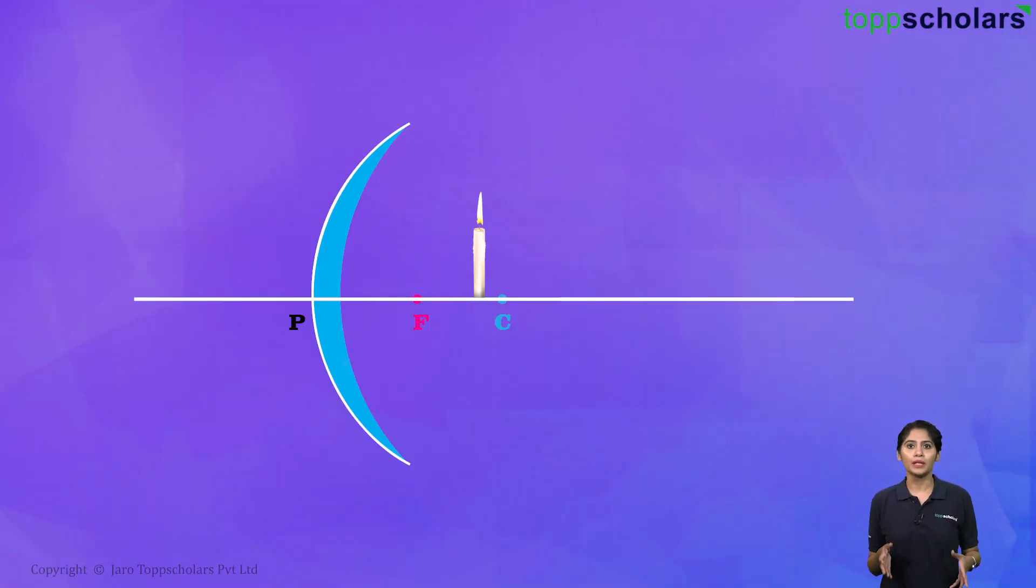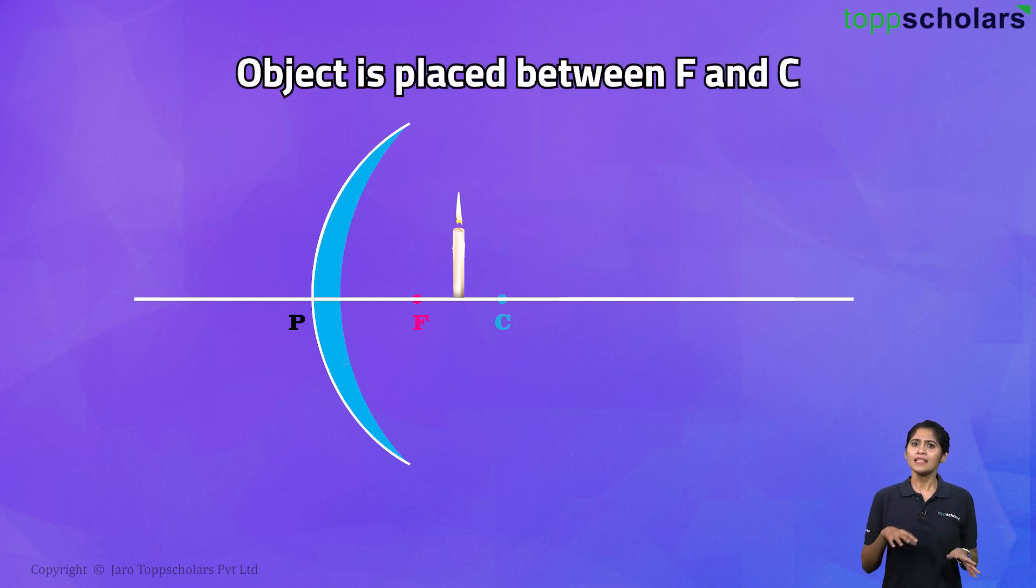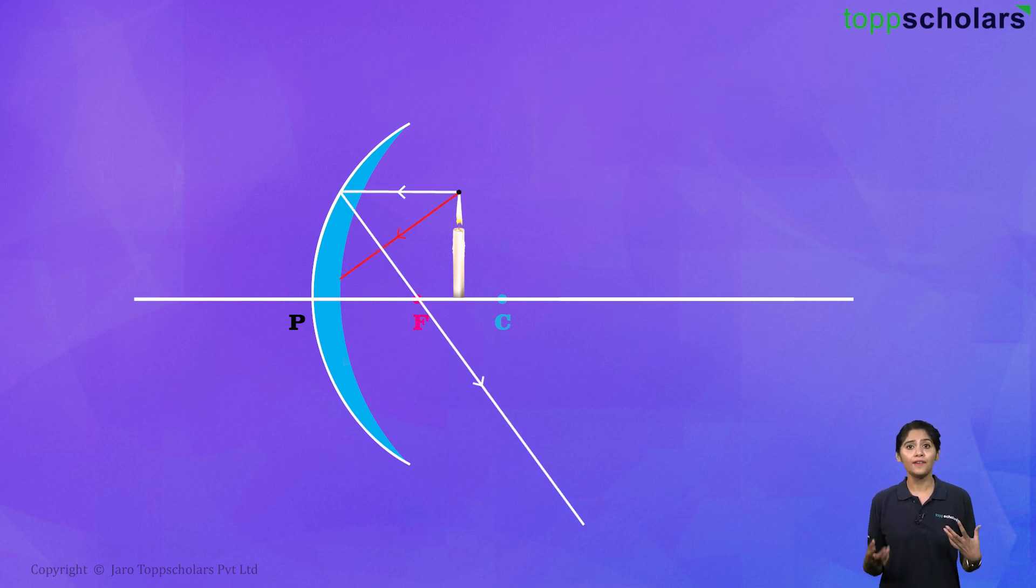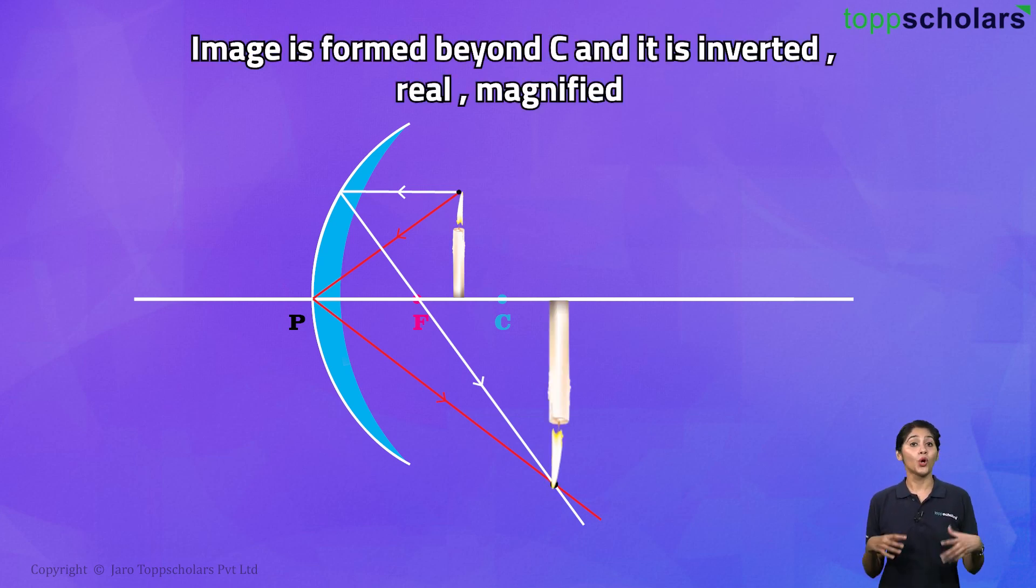Let's now bring the object even closer. Let's say we keep it between F and C, somewhere over here. Well, now if you draw the ray diagram, we'll find that all the rays of light are going to intersect somewhere over here, beyond C. So the image will be beyond C. And it will be huge in size. Closer you bring this, farther the image will be and the bigger it will be.